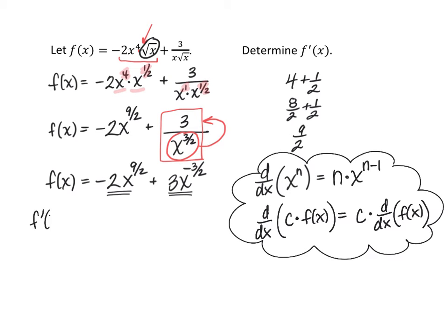We have -2 as the constant multiple. Using the power rule on x^(9/2): that's (9/2)x, then subtract 1 from the exponent. When subtracting 1, that's like subtracting 2/2, giving us 7/2.